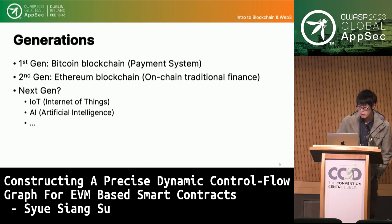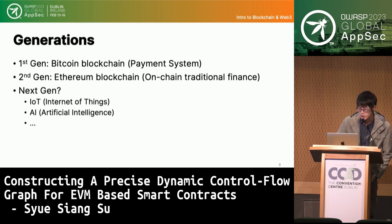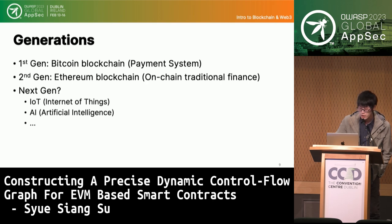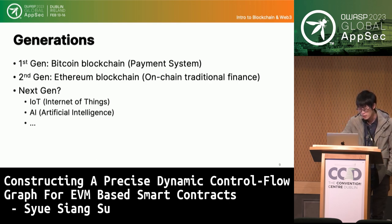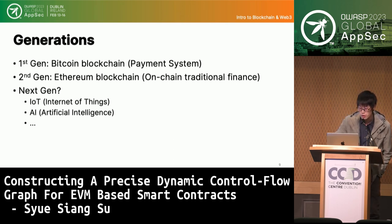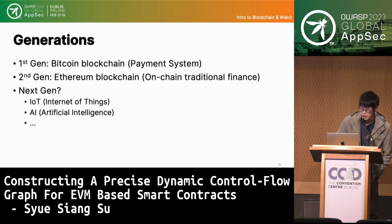Blockchain technology has evolved over the years into a much more mature technology. The first generation is Bitcoin, mainly used as a payment system, though not very practical in reality since it can only process seven transactions per second. The second generation is Ethereum, which we'll discuss more in following sections. As for next generations, they may integrate with other promising technologies such as IoT and artificial intelligence.